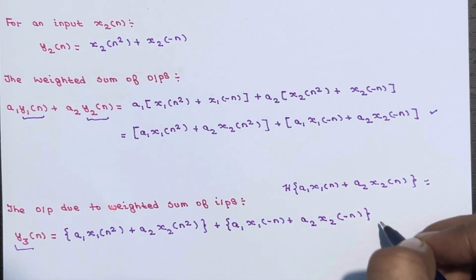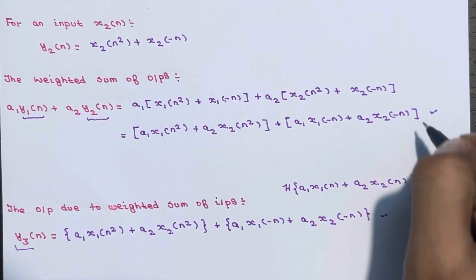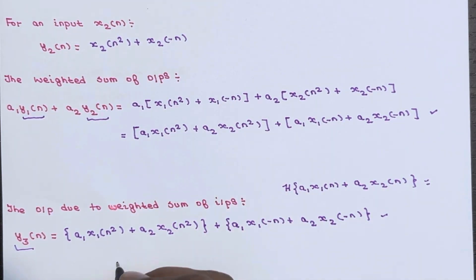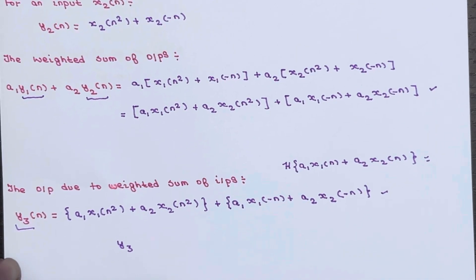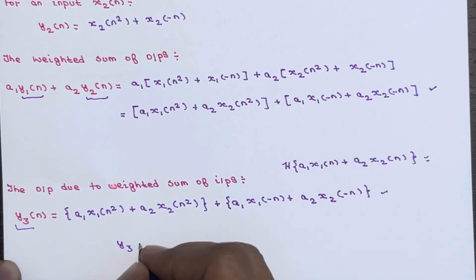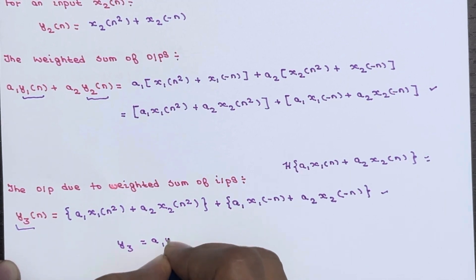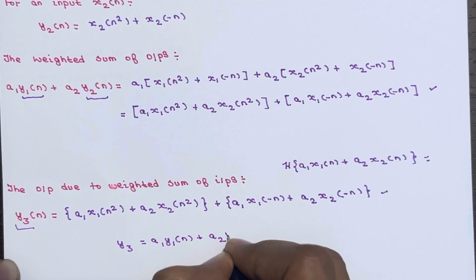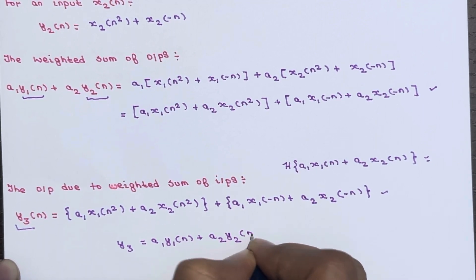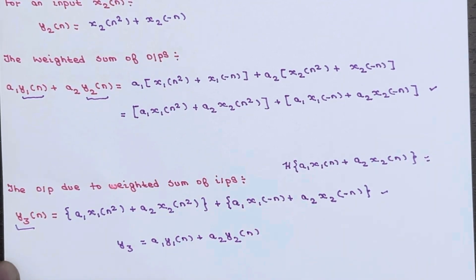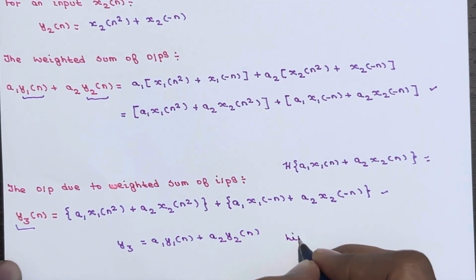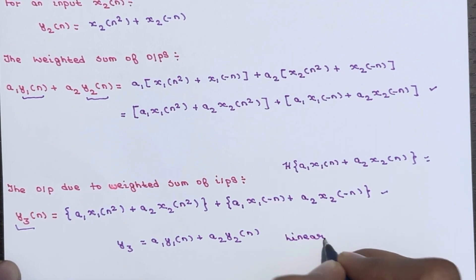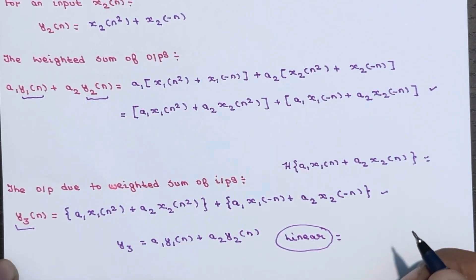Comparing both expressions, we get that y3 of n equals a1 times y1 of n plus a2 times y2 of n. Since these two are equal, our system is a linear system.